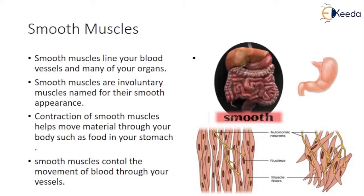Smooth muscles line your body's blood vessels and many of your organs. Smooth muscles are involuntary muscles named for their smooth appearance. Contraction of smooth muscles helps move material through your body, such as food in your stomach. Smooth muscles also control the movement of blood through your vessels.